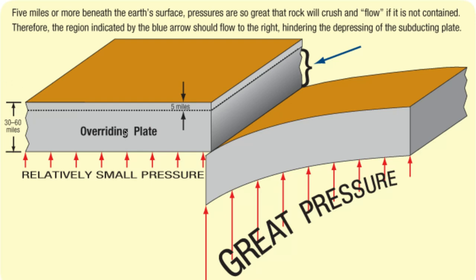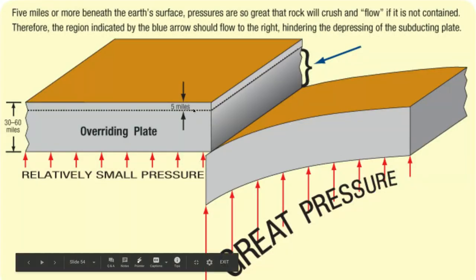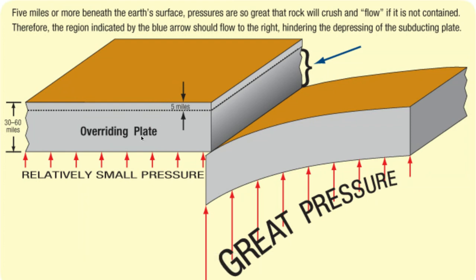Here we have one plate and another plate, and they are colliding. A lot of times what happens is that one plate actually has a higher density than the other. The one with the higher density is going to sink under the other plate. To give you an idea of how much pressure this creates — this is five miles. A plate riding on the Earth's surface can actually be 30 to 60 miles thick.